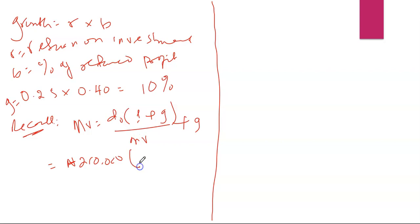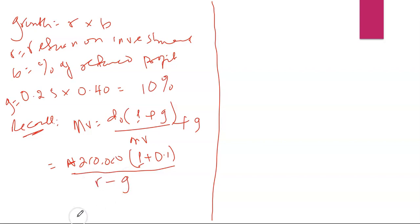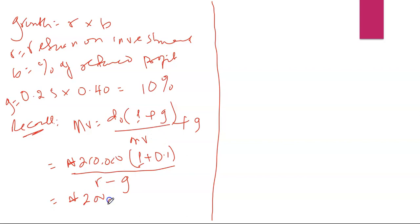I have already calculated the dividend as 210,000. That figure goes into the numerator: D0 multiplied by (1 + growth). Our growth is 0.1, so the numerator becomes 210,000 × 1.1. In the denominator we have r minus g. We have replaced r here with ke — the return on ordinary shares, which is 15 percent.